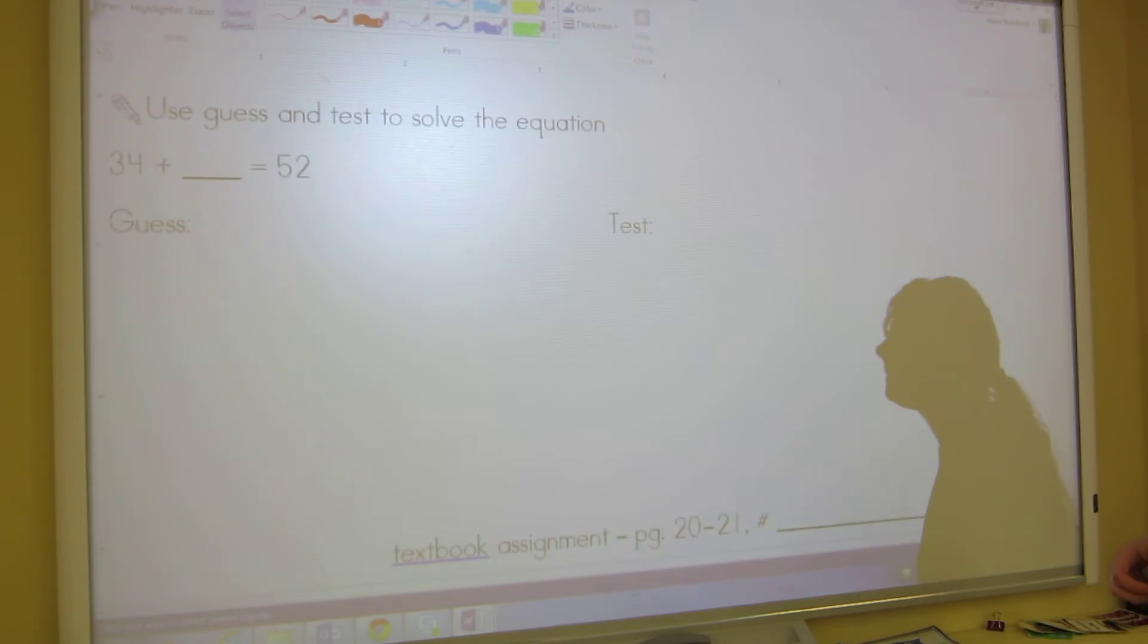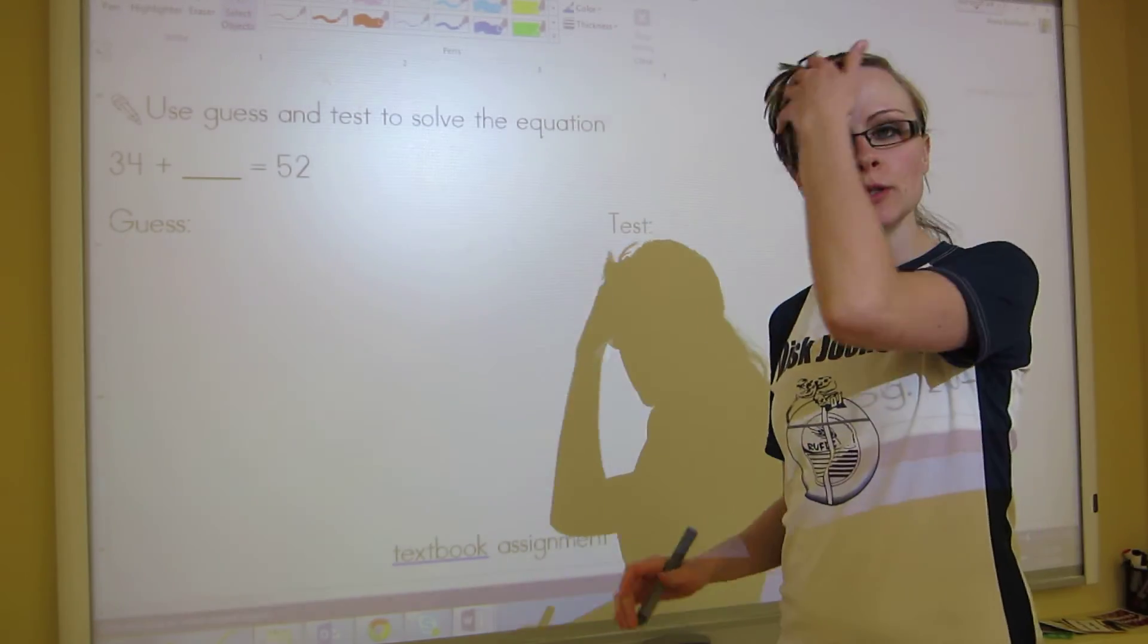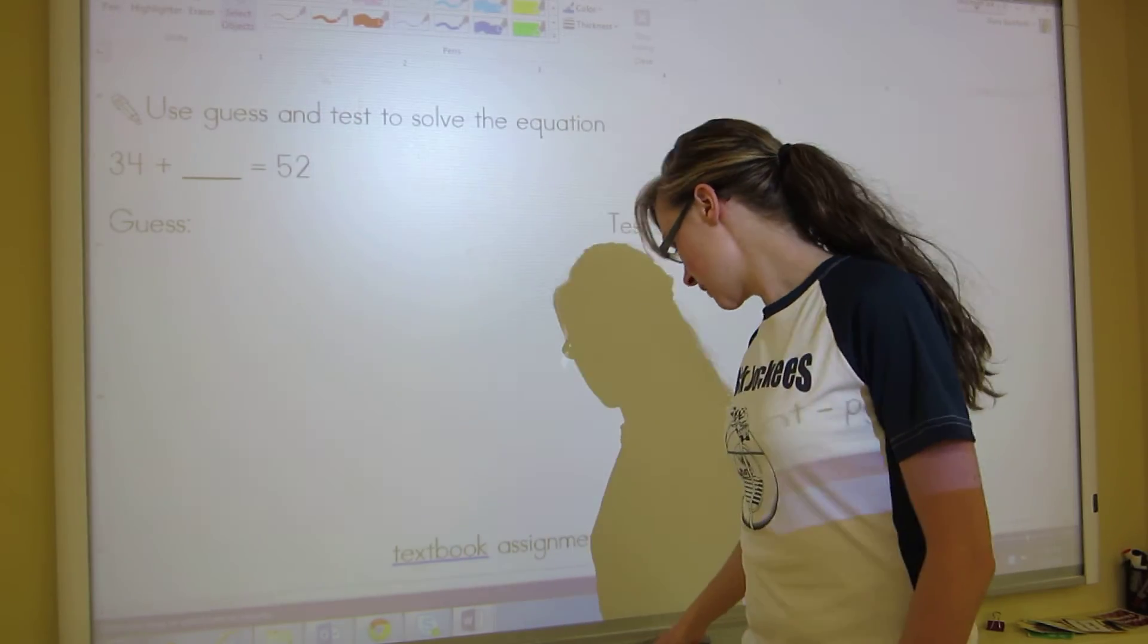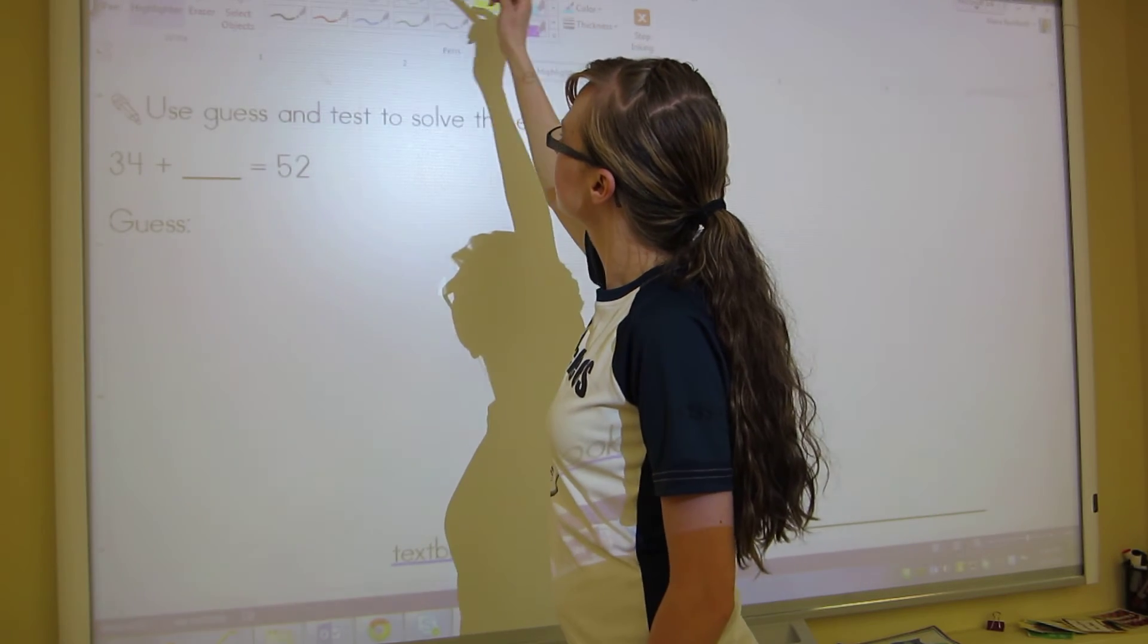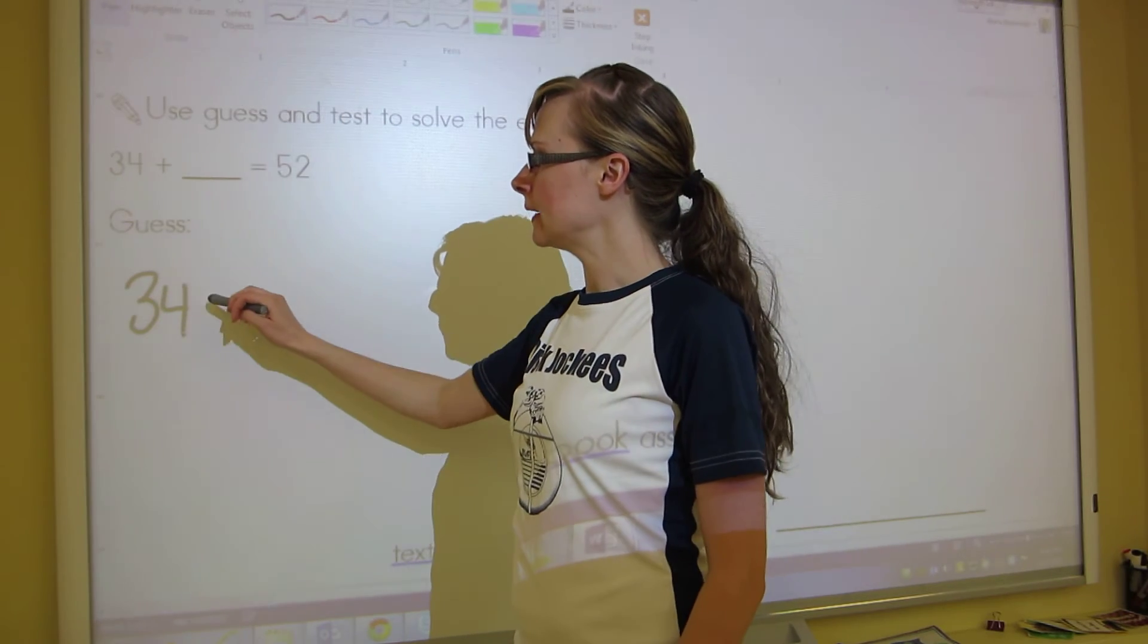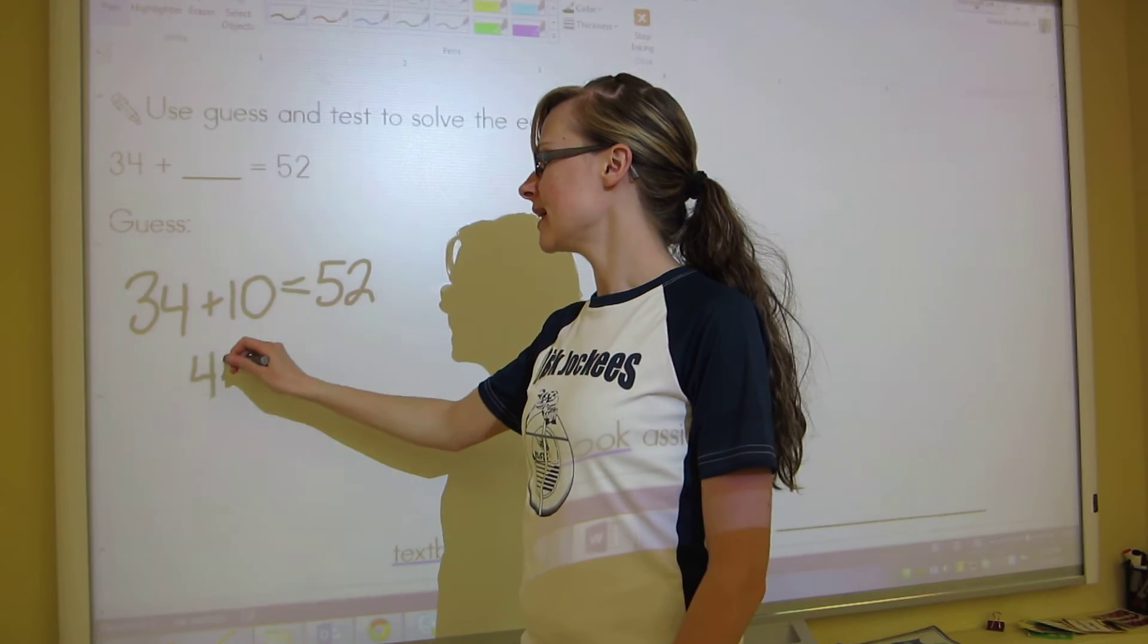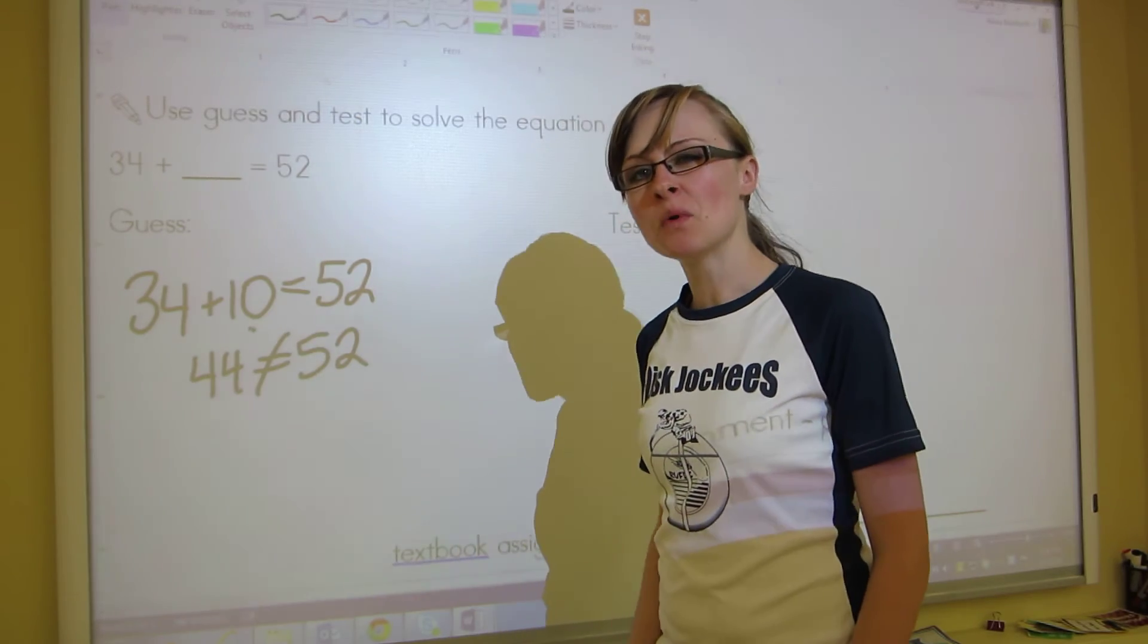Next one is use guess and test to solve the equation. In guess and test, you just think of a number that you think might be close. If you add to 34, it would be close to 52. Maybe I'm thinking that 34 maybe plus 10 equals 52. Let's check it out and see. 34 plus 10, that's 44. So that does not equal 52. That means I need to add more to 10. I need to make my number that I'm adding bigger.